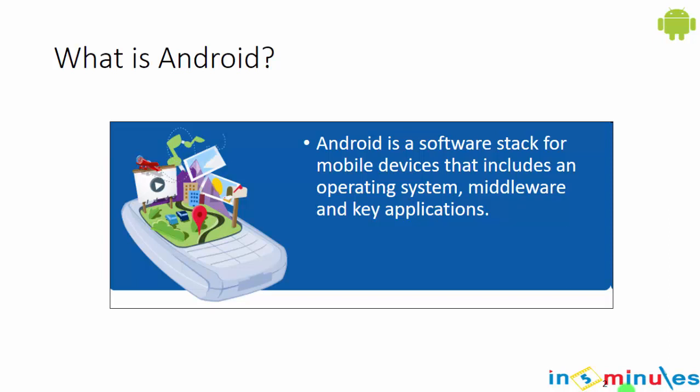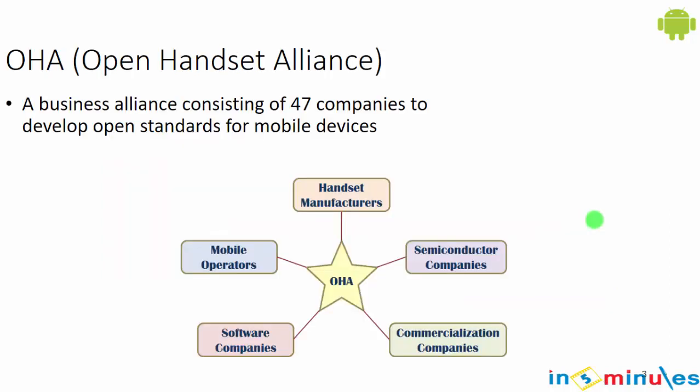When it comes to the Android operating system, the first thing you should know is what Android is made up of. Android is a software stack for mobile devices that includes an operating system, middleware, and key applications.